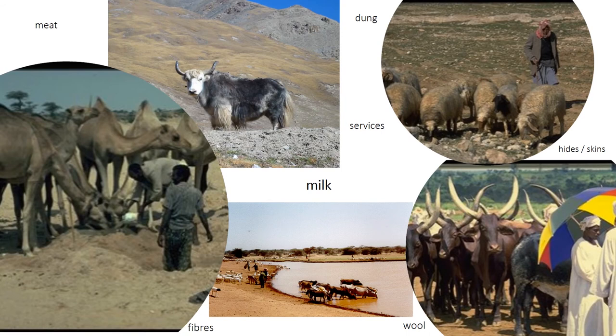One key point: while the scientific and development literature often focuses on meat from pastoral areas for market purposes, pastoral systems are fundamentally hinging on a milk-based economy. The heart of a pastoral system is to produce milk on a consistent and continuous basis — that is the basic foundation of the pastoral economy. Even though other products such as services, fibers, dung, and meat are often mentioned, milk has to be kept at the center of attention when looking at pastoral systems.